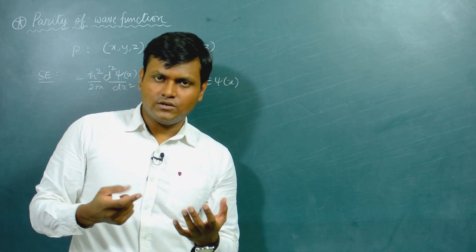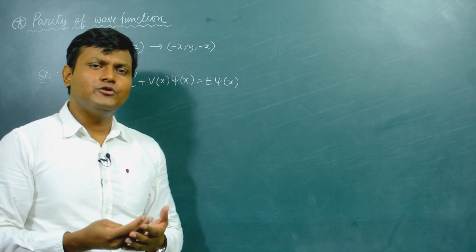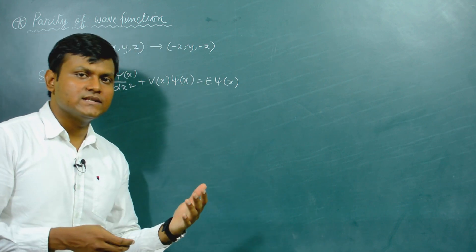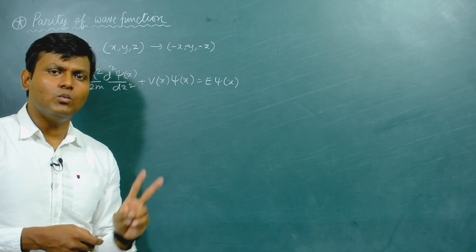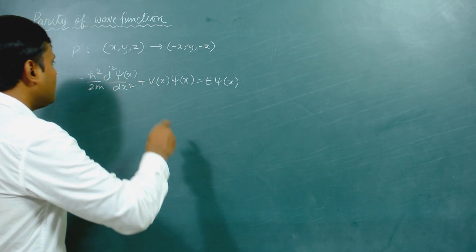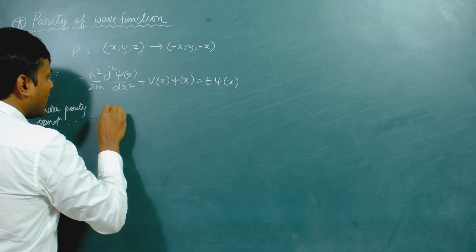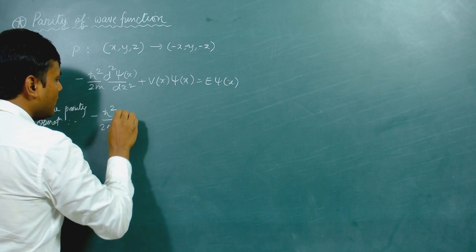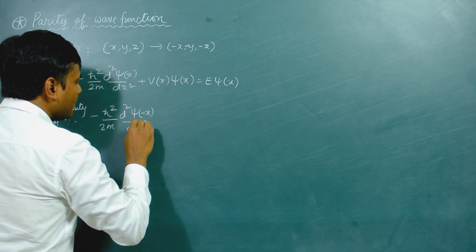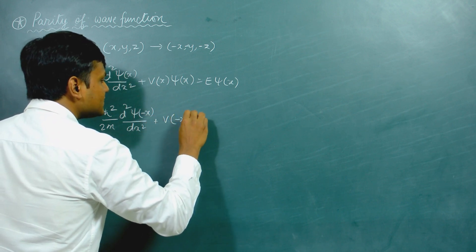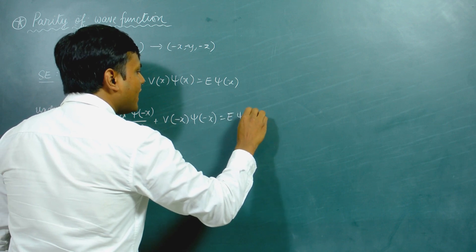Under parity operation or space reflection, what we simply have to do is substitute x with minus x. Since this is an equation involving only one dimension, under parity operation the Schrödinger equation becomes: minus h-cross squared over 2m times d²ψ(−x)/dx² plus V(−x)ψ(−x) equals Eψ(−x).